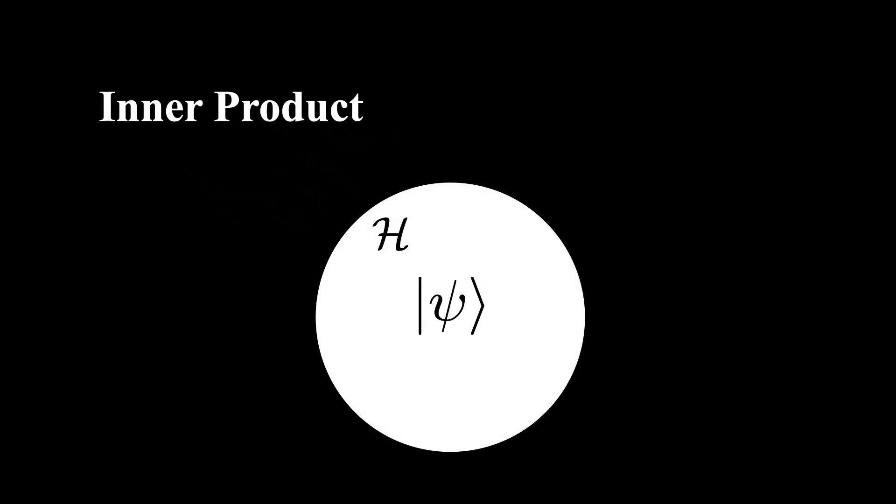So in the context of quantum mechanics, we have vectors that are called kets living in this larger abstract Hilbert space. But remember, kets are just the name physicists give to these vectors. They are actually functions. And I think it would be helpful for the remainder of this video to remove the ket notation and just focus on the fact that these vectors are functions.